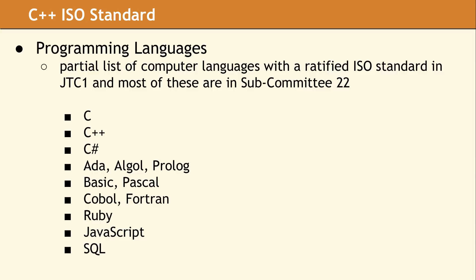Having an approved ISO standard does not necessarily make a computer language better. There are some developers who will say obtaining the approval of ISO can slow down the development of a language, and this may be accurate. However, without an approved standard, compiler designers can choose which parts of the language to implement, and porting from one compiler to another may produce inconsistent results.